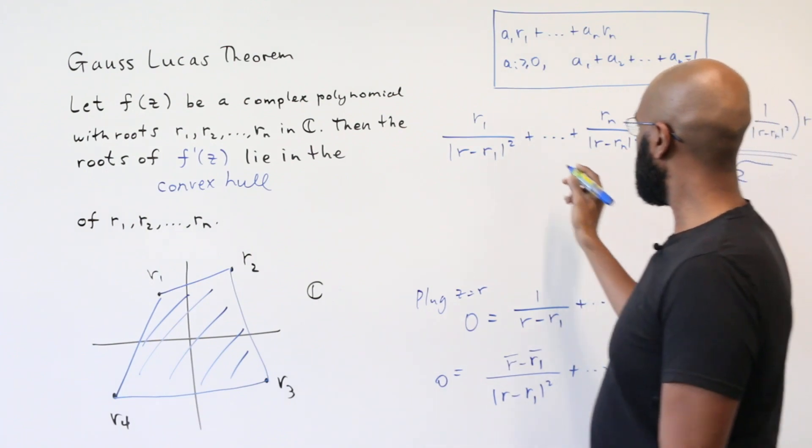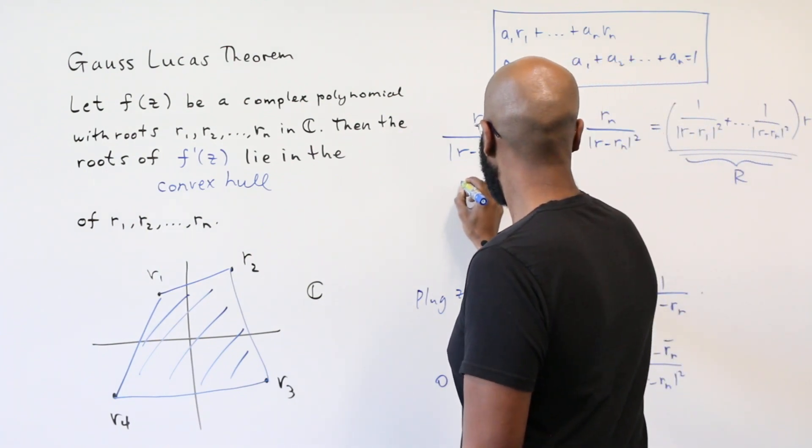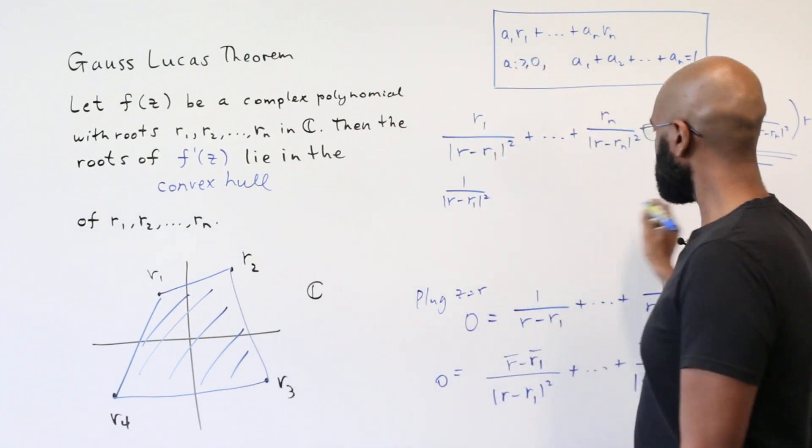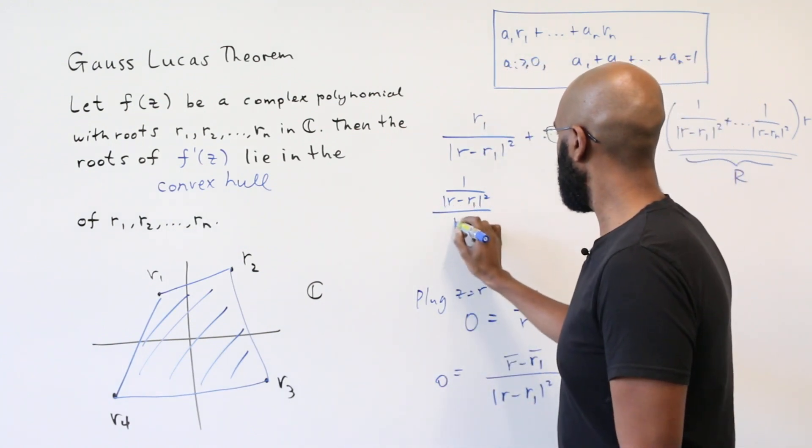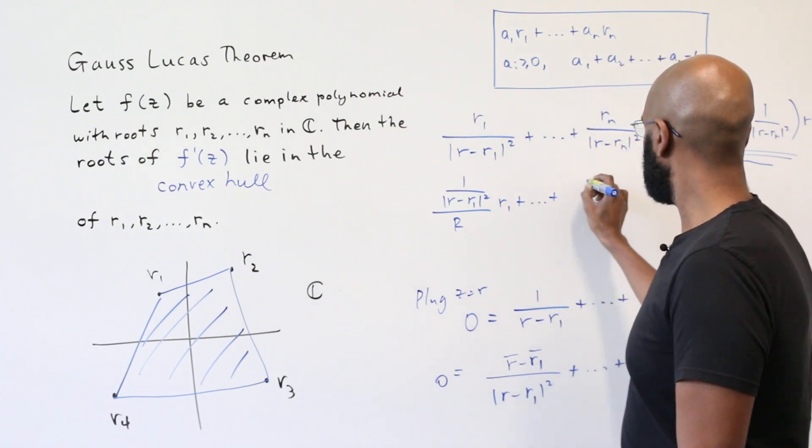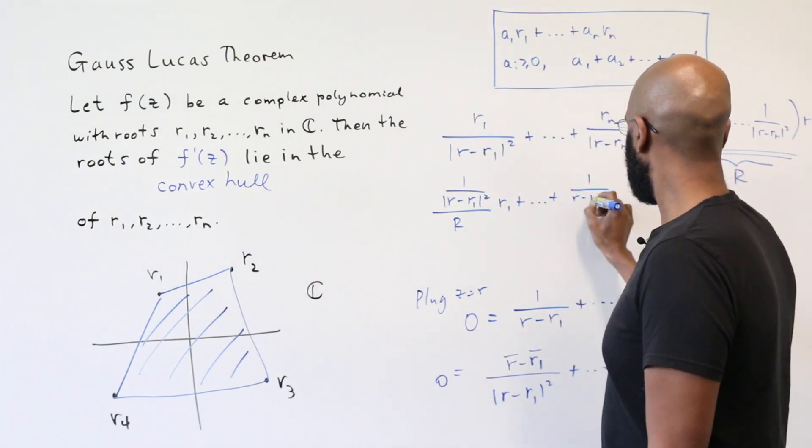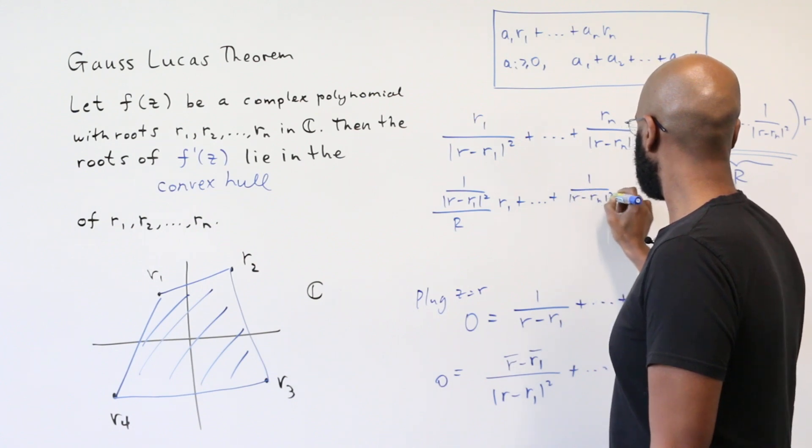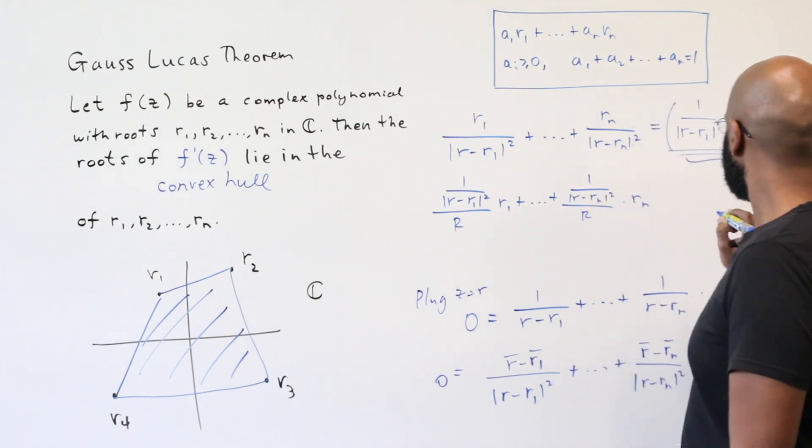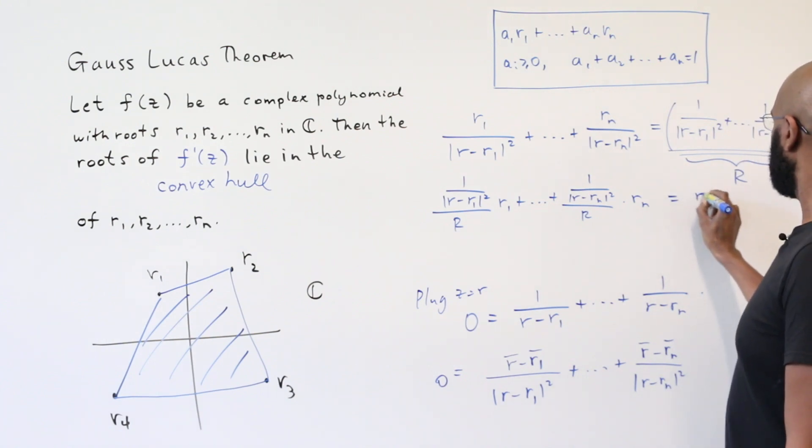If we divide by capital R we get 1 over R, the modulus of r minus r1 squared, divided by R, r1 plus up to 1 over r minus rn modulus squared, over R times rn equals little r.